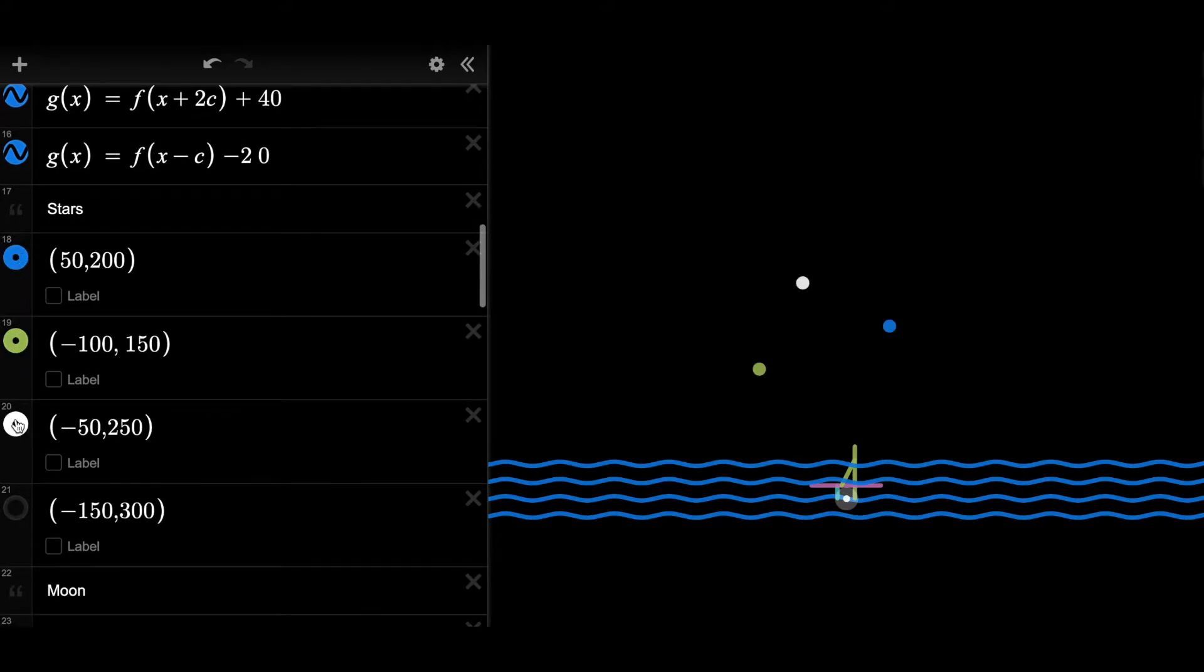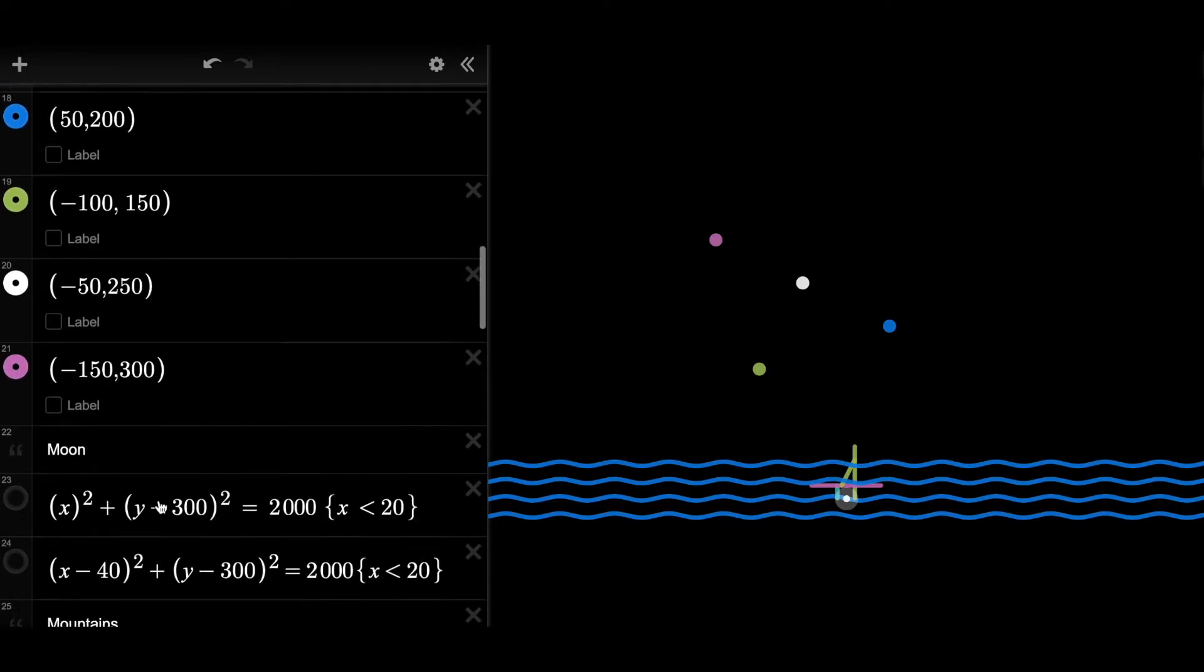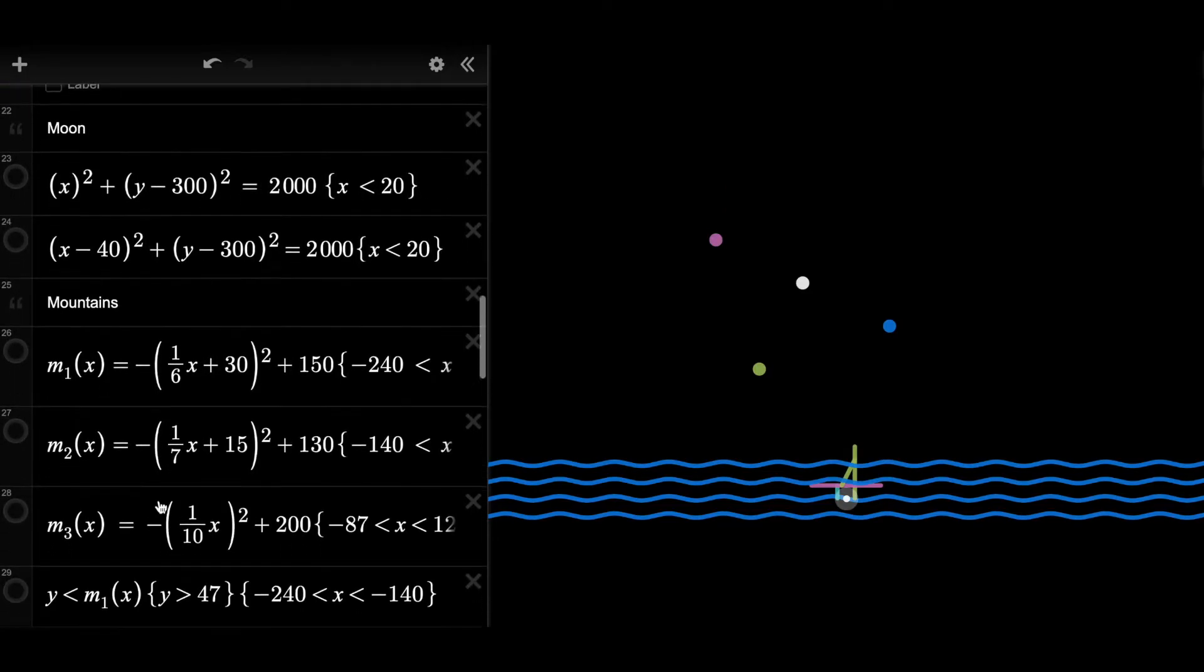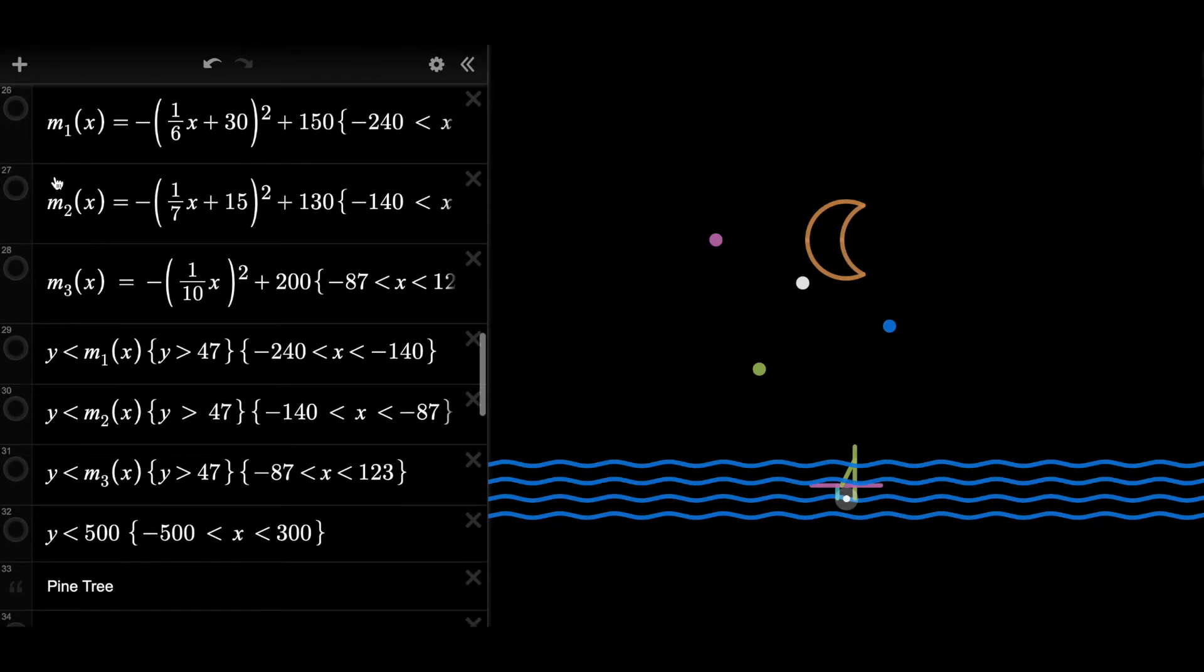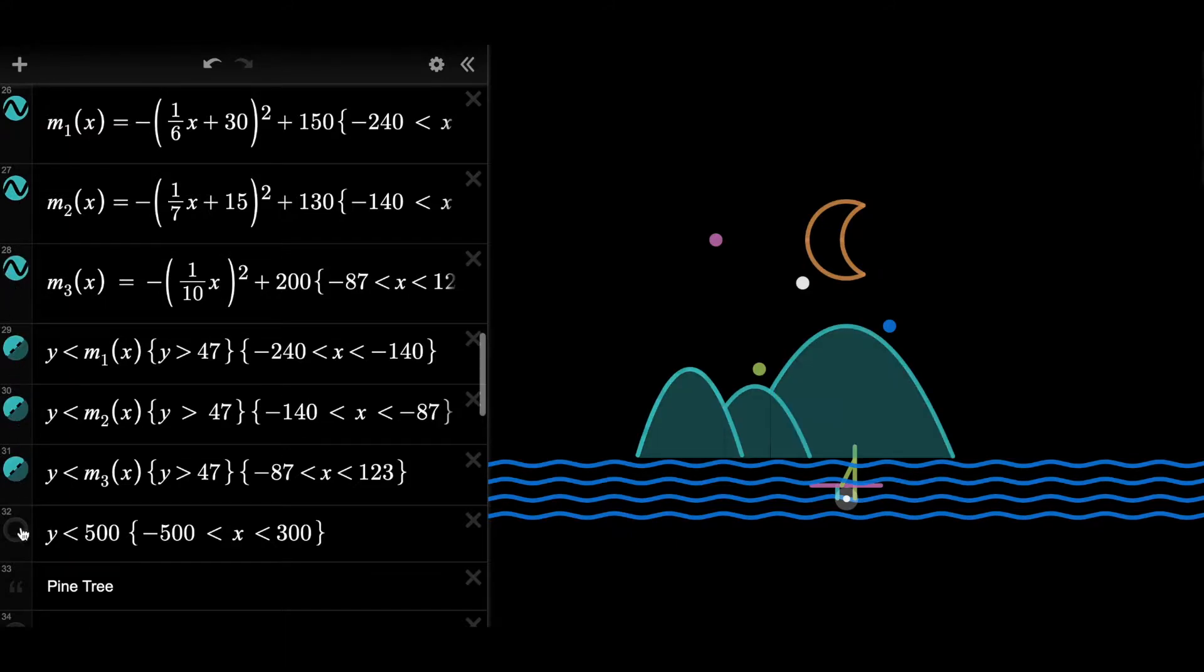For stars, I just use dots. For the moon, again, I use two circles with restrictions on the x values. For mountains, I use parabolas, three parabolas, shaded them.